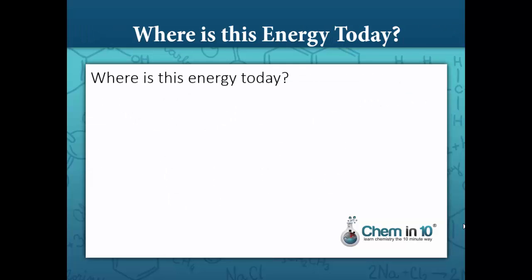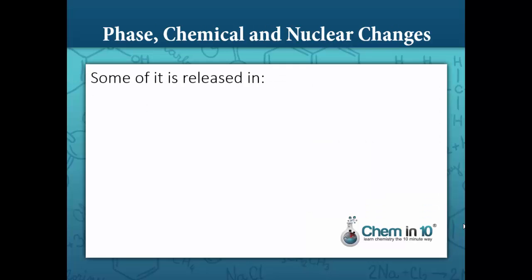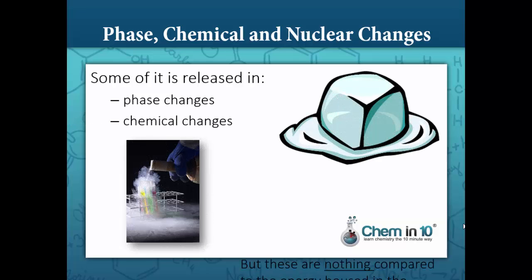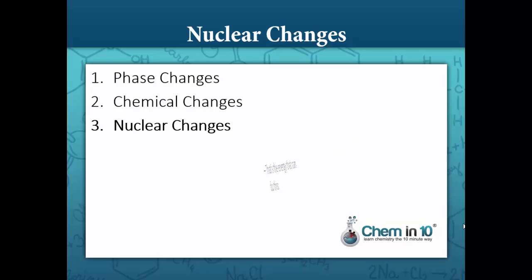Where is this energy today, this 10 to the 32 Kelvin of energy? Some of it is released in phase changes and chemical changes. But these are nothing compared to the energy housed in the nucleus of an atom. That's the energy that can do this.